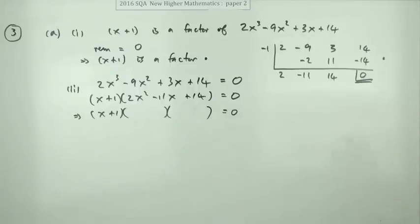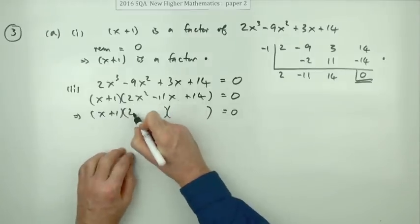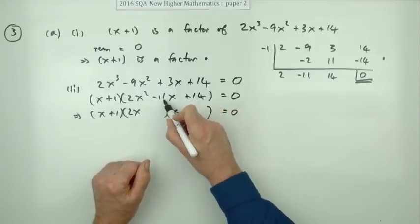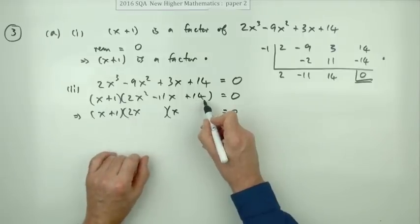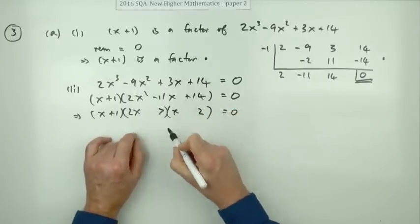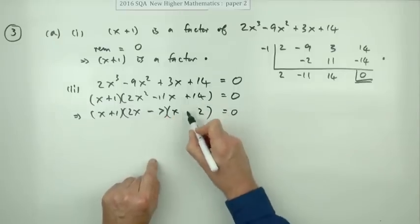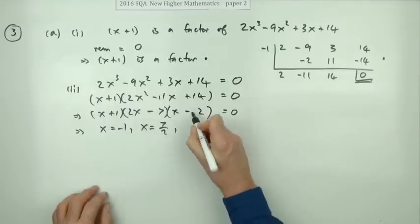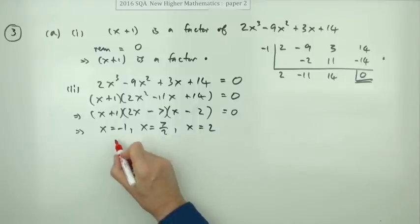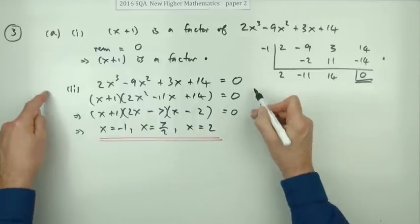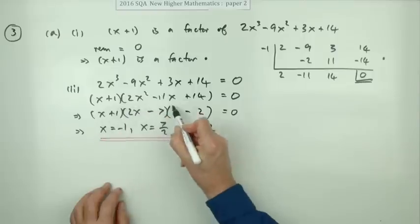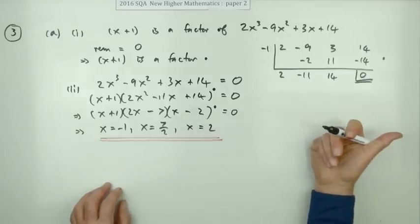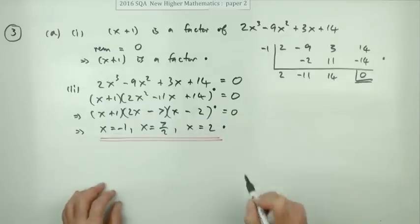To factorize 2x² minus 11x plus 14 directly: it factorizes as (2x minus 7)(x minus 2). You need two numbers that multiply to give 14 and combine — with one doubled — to make 11: that's 2 and 7, double the 2 to get 4, and the signs are both negative. This gives the three solutions: x equals negative one, x equals 2, and x equals 7 over 2. The marks are for the quadratic factor, factorizing it, and stating the three solutions.